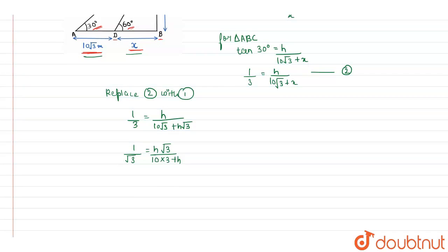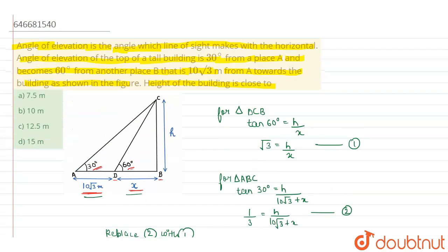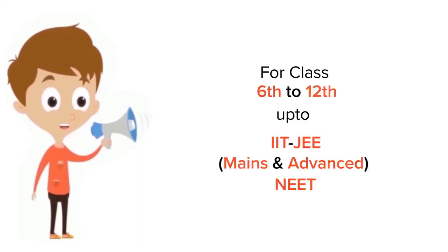Now after solving this we will get 3h is equal to 30 plus h. That will be 2h is equal to 30. So the value of h will be 15 meters. So our correct answer is 15 meters.